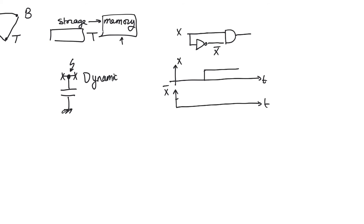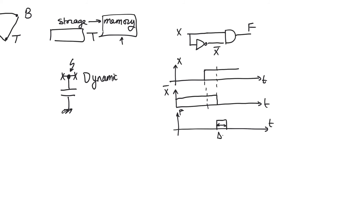X-bar takes some time for its output to drop down to zero. So there is an interval of time during which both X and X-bar are one, allowing the circuit to produce an output F that is an impulse of one. The duration of this impulse equals the delay of the inverter, and it is not produced immediately after X rises but takes some delay — the delay of the AND gate.